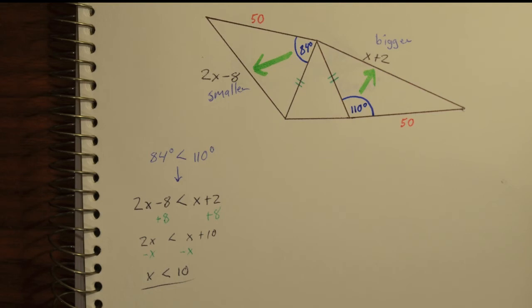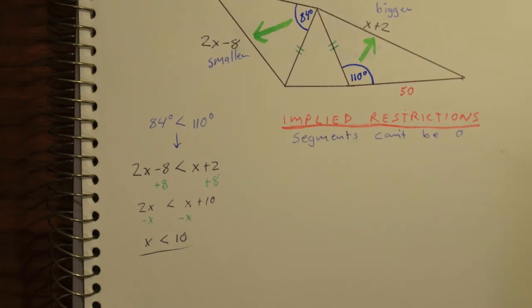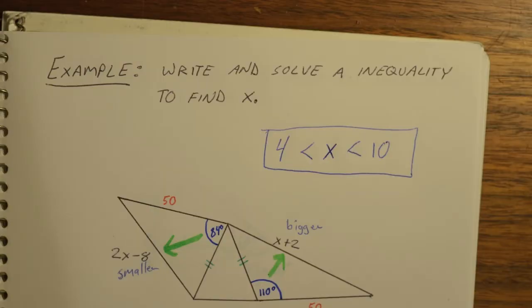However, x < 10 allows values like negative 500, so there are implied restrictions. Segment lengths can't be less than 0 — in fact, 2x − 8 must be greater than 0 for the triangle to exist, giving us x > 4. Combining both inequalities, our final answer is 4 < x < 10.